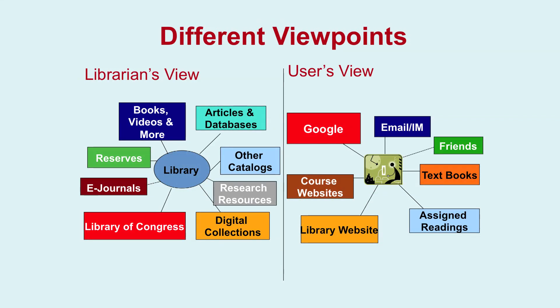There are two different viewpoints. A librarian's viewpoint covers books, videos, reserves, e-journals, articles, and databases, whereas from the user's perspective, it is more about Google, course websites, library website, friends, and textbooks. There is a completely different view. You need to understand the perspective — as a librarian or as a user — and differentiate. Library use has been increasing and not decreasing. The ease of acquiring information has created millions of information consumers, with university students being the most discerning and demanding among them.